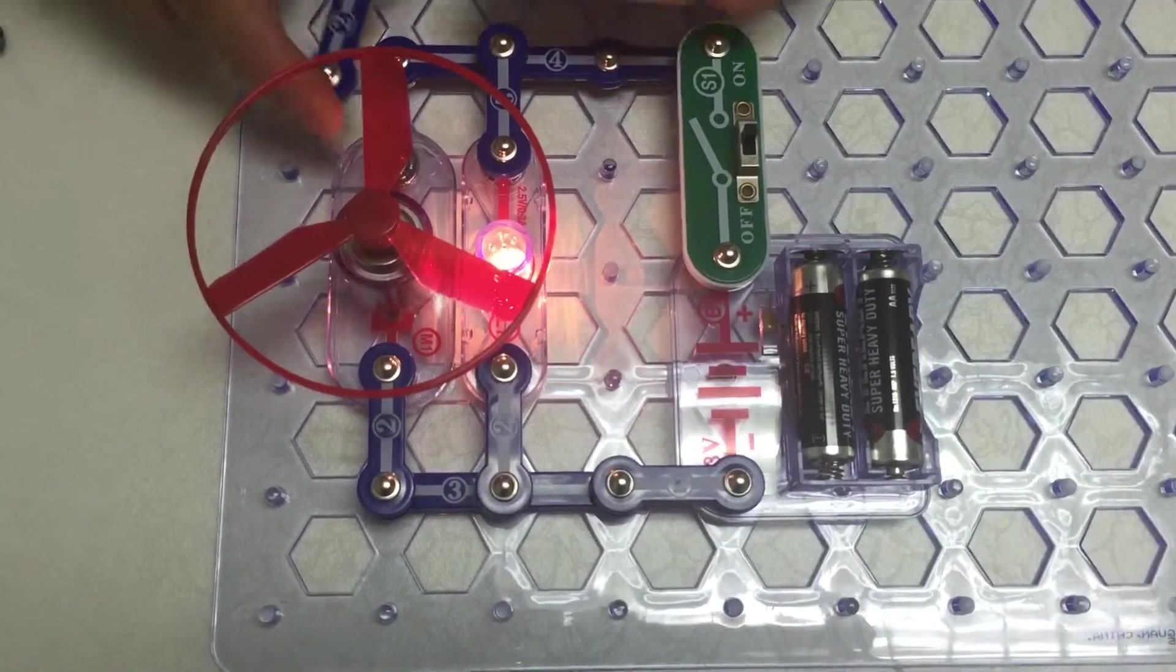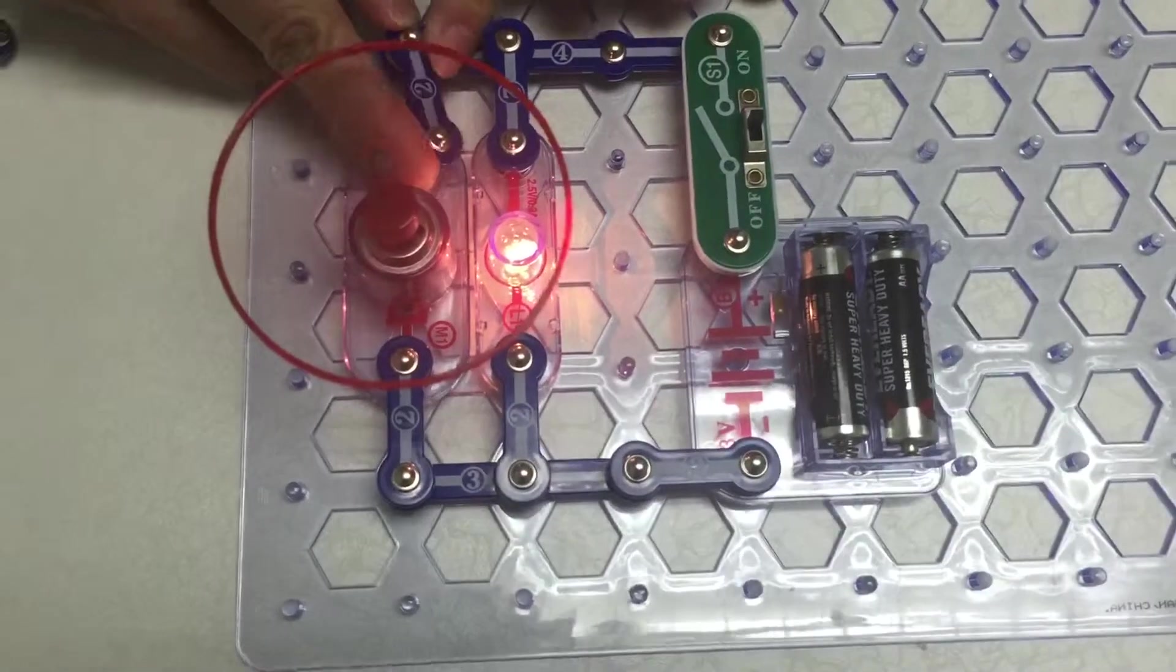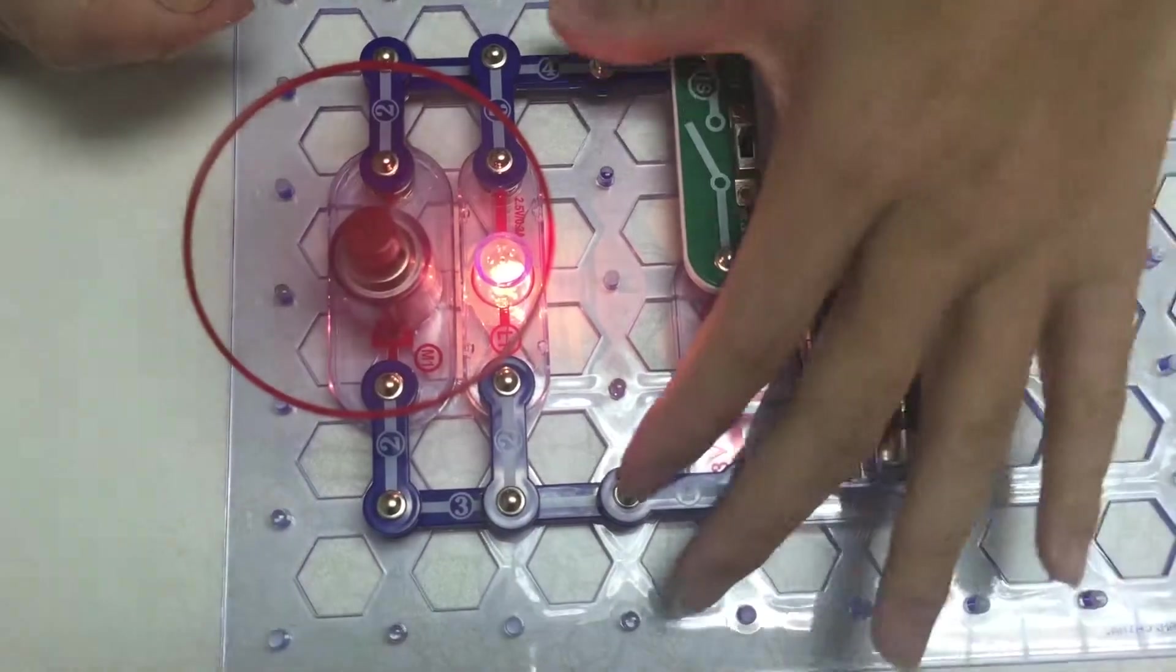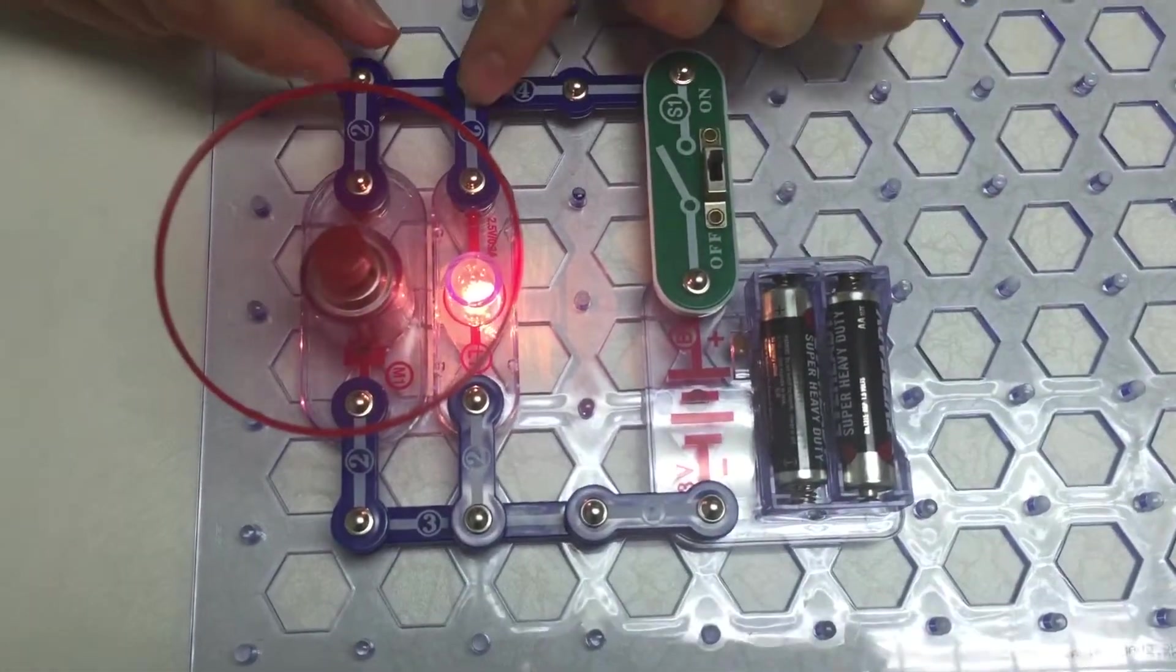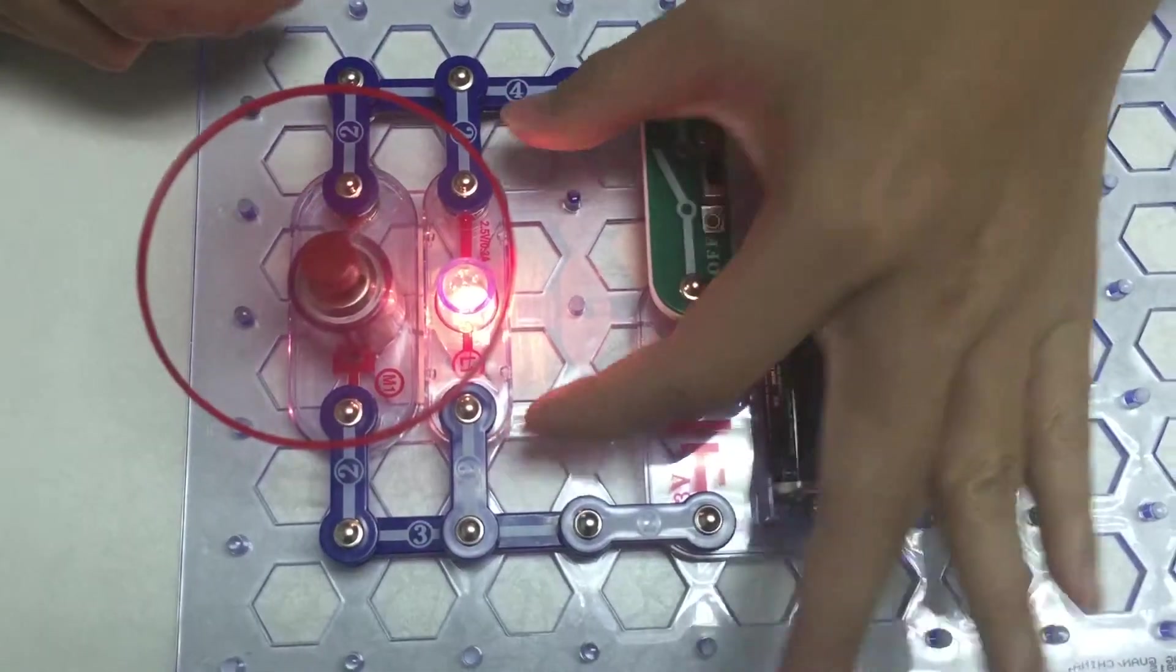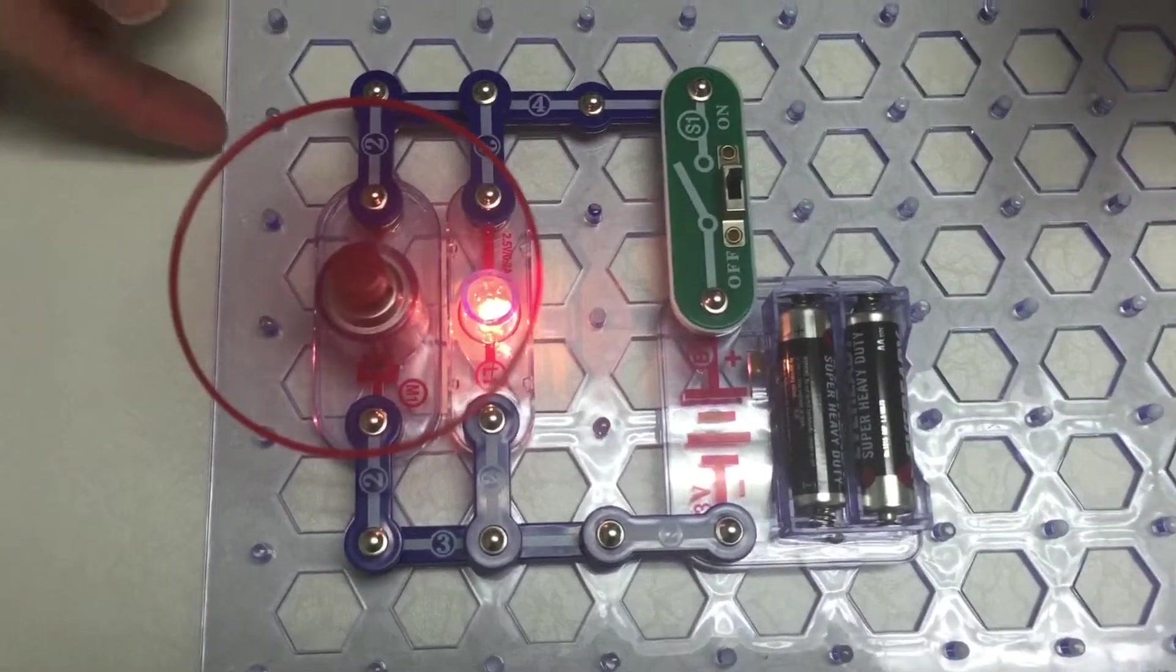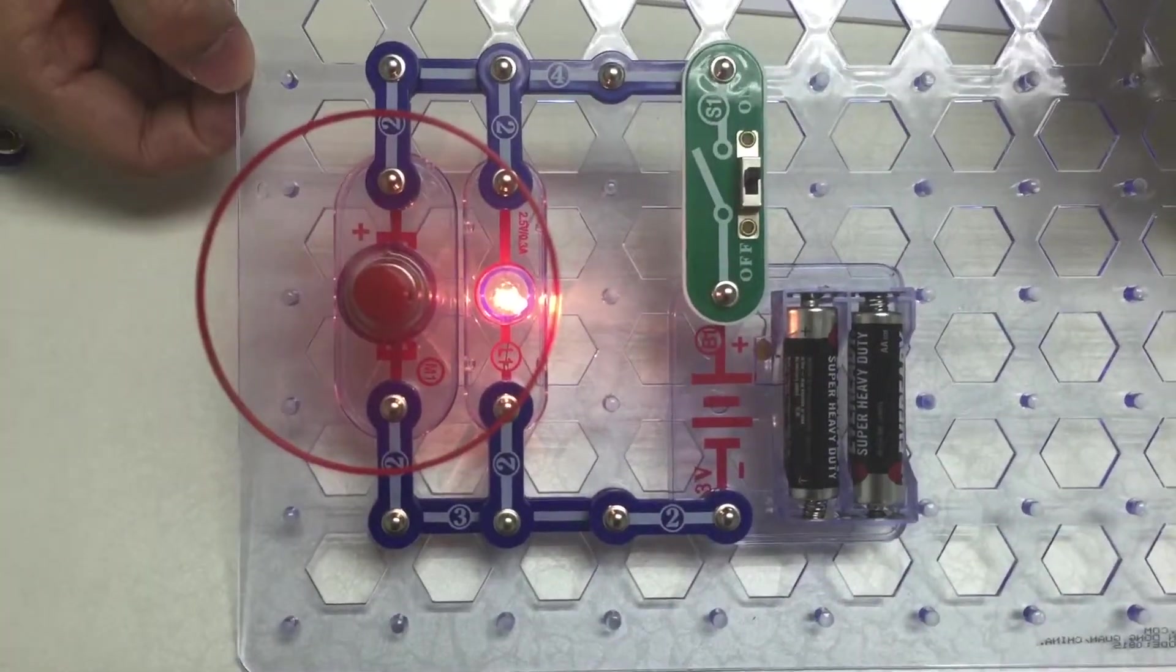This is the big difference between series and parallel circuit. In a parallel circuit, your voltage or your current still has an alternative path for them to flow even if one part of the parallel circuit is broken. See again, this is the parallel circuit. Thank you.